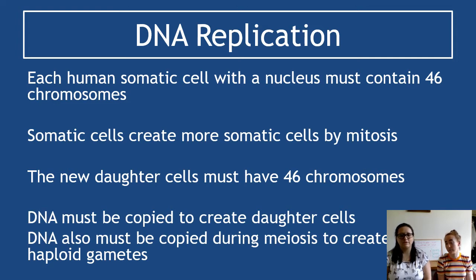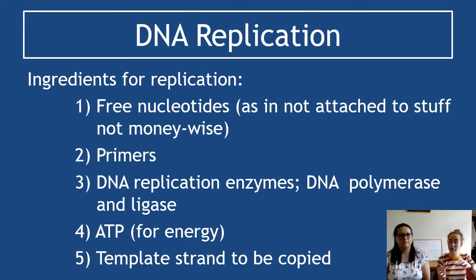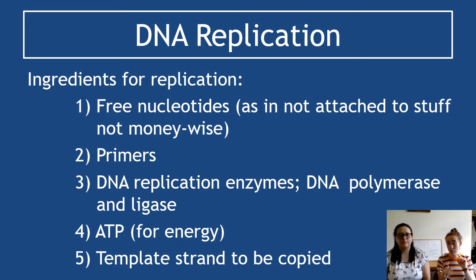In terms of DNA replication, we look at it in two ways, but for all of it the main ingredients required are: first, free nucleotides — not attached to other nucleotides, just the sugar, phosphate and base on their own. Then we have primers, which are short segments of DNA. The DNA replication enzymes are DNA polymerase and ligase. We also need ATP for energy, and a template strand that will be copied.